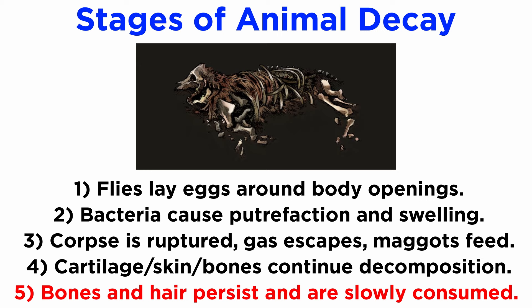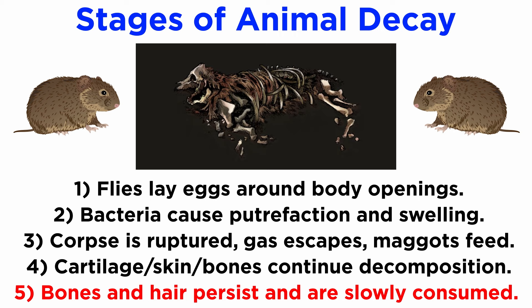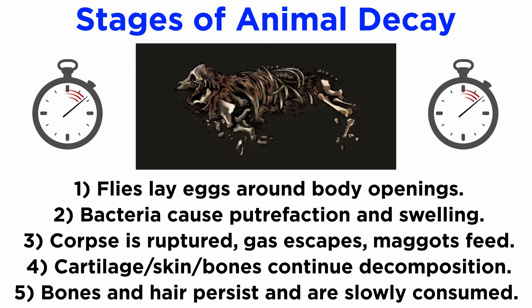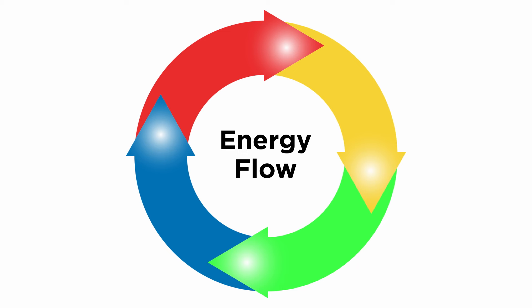Finally, only bones and hair remain, and they can persist for several years or more. Eventually, even these are consumed. For example, mice and voles will gnaw on old bones to obtain the calcium they contain. Clothes moths help break down hair or feathers. The progression through these stages depends to some extent on the time of year when death occurs, but typically it takes several months from beginning to end. With some key aspects of energy flow and nutrient cycling understood, let's now widen our scope and examine entire food webs.